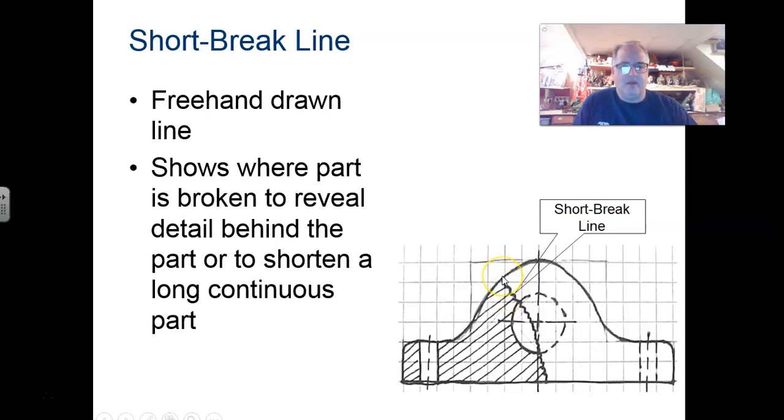That's your short break line. Usually, it's freehand drawn. It can be squiggles like this. Sometimes, it might even be a little bit more uniform. It's never like an arc would be. There is some type of a broken, jagged, zigzag type feature on that to indicate that it is a short break line.